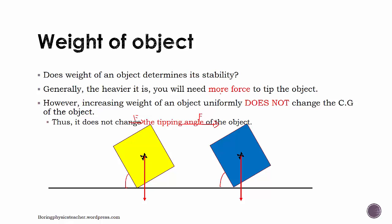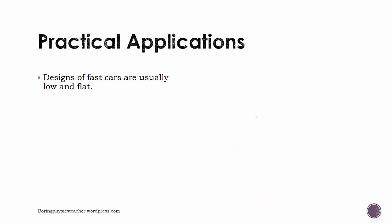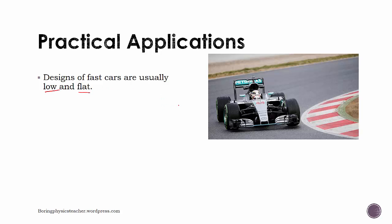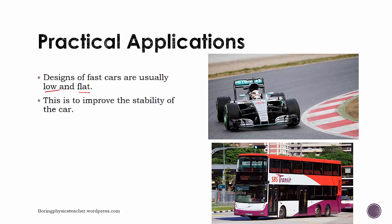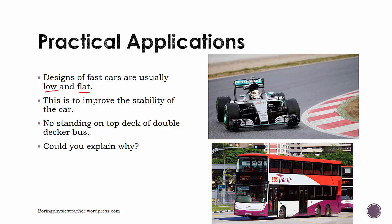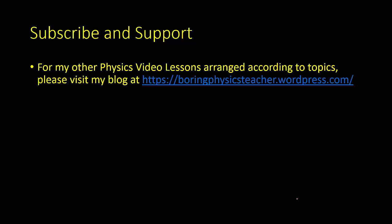Designs of fast cars such as F1 cars are usually low and flat to improve stability. Another example: on a double-decker bus, there is usually a rule that passengers cannot stand on the top deck. Can you explain why having many people standing on top would affect the bus's stability? I'll leave that for you to think about.